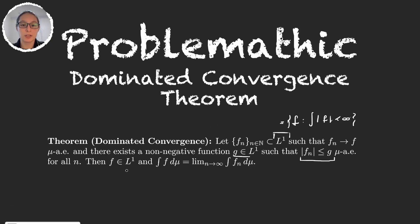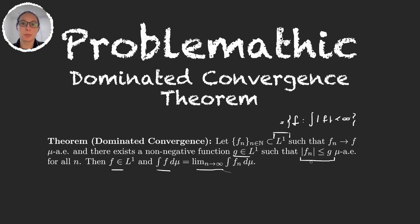What the theorem says is: under all these hypotheses, the limit function f is in L1 and we can take the limit outside of the integral — the integral of the limit is equal to the limit of the integral. These are two important hypotheses: pointwise convergence almost everywhere and the existence of a dominating function g. I'm going to assume that my functions are real-valued; if they were complex, the same would work by dividing into real and imaginary parts. So I'll focus on functions f from the measure space (X, M, μ) to the real numbers.